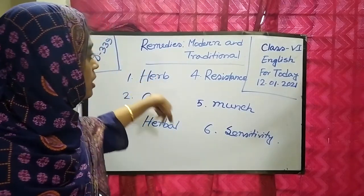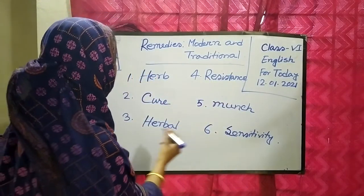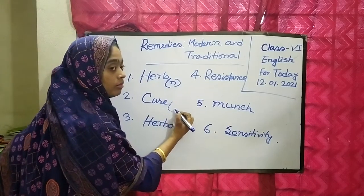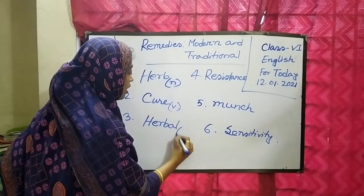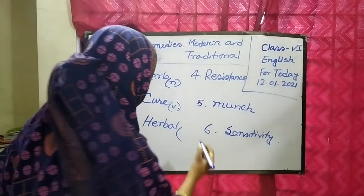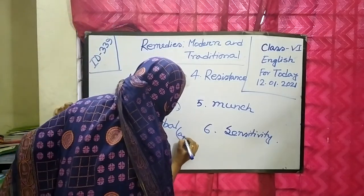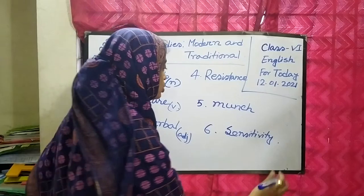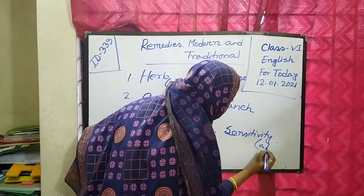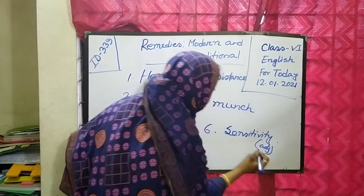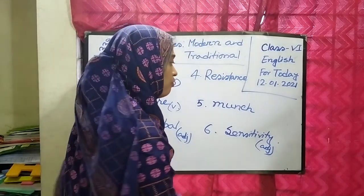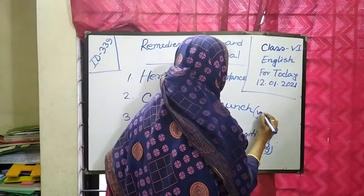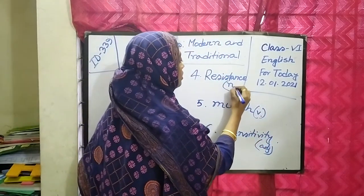Can you tell me the parts of speech? Herb will be a noun. Cure will be a verb. Herbal will be an adjective. Sensitivity — this one also? Adjective. Munch will be a verb — eating steadily or audibly, that means verb. Resistance is a noun.